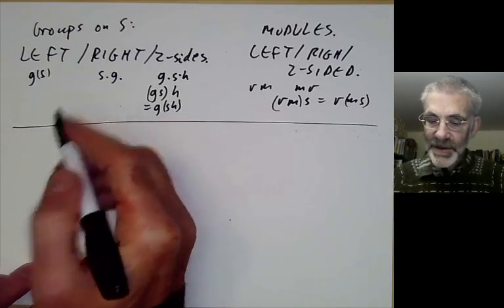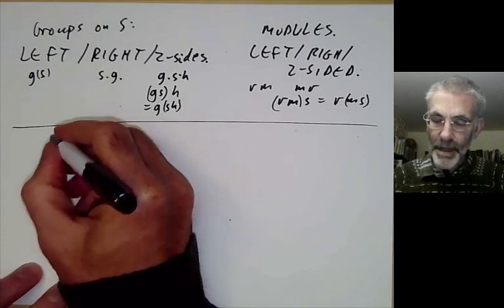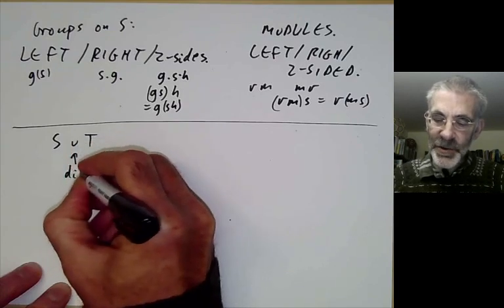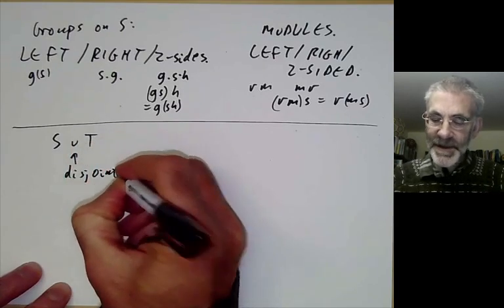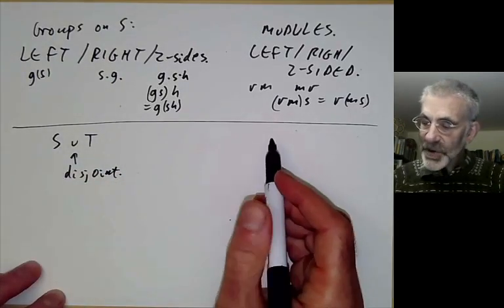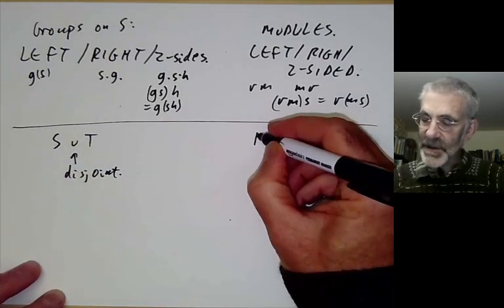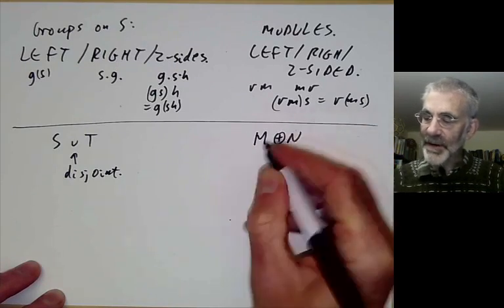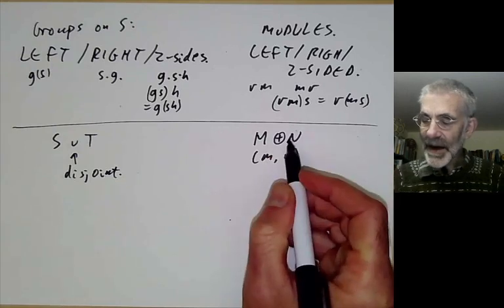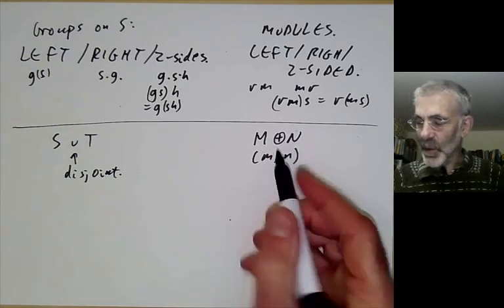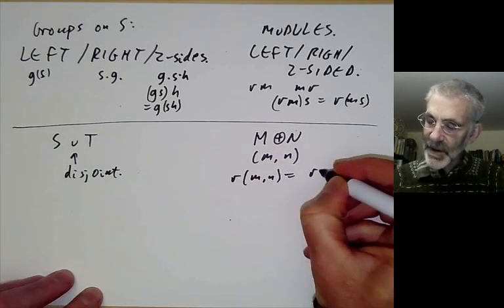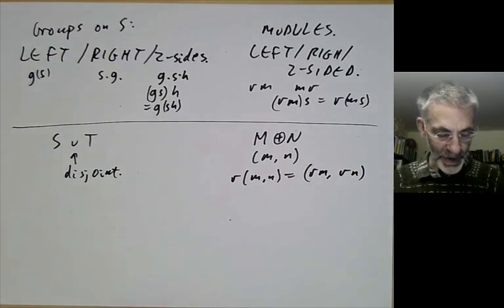With groups acting on sets, if you've got a group acting on S and a group acting on T you can take the disjoint union of S and T and the group obviously acts on that. For modules we can do exactly the same — if we've got a module M and a module N over a ring then we can take the direct sum of all pairs (m, n), and this forms a module over R in the obvious way: r·(m, n) = (rm, rn).